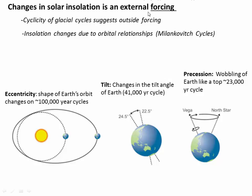We think of insolation changes as an external forcing. As soon as climate records were developed, people noticed that they were cyclical — there was something cyclical about climate change. That right away suggested there could have been a cyclical forcing, something from outside that was changing in a regular way. People knew that the Earth-Sun orbit is something that changes cyclically, and it turns out these cyclical changes do have pretty important impacts on the pattern of solar insolation that Earth receives.